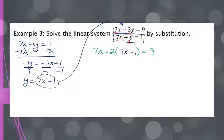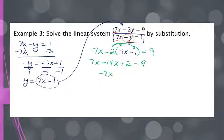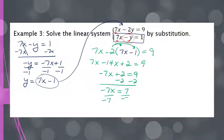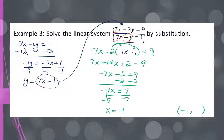Now I have an equation with only x's, so I'll get half of my answer. I have to distribute the negative 2, giving me 7x minus 14x plus 2 equals 9. Combining like terms, 7x and negative 14x gives negative 7x. Then I subtract 2 from both sides, leaving negative 7x equals 7. Finally, dividing both sides by negative 7 gives me x equals negative 1. That's my x value — half of my answer.